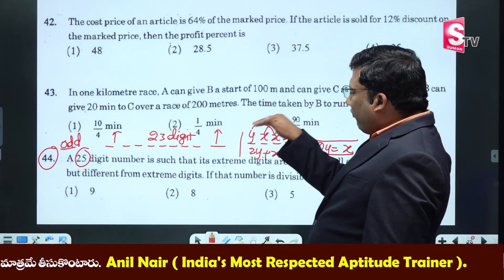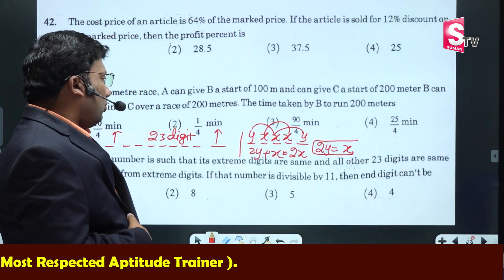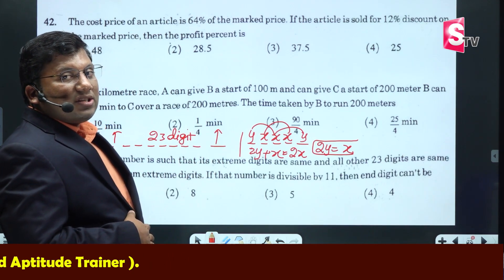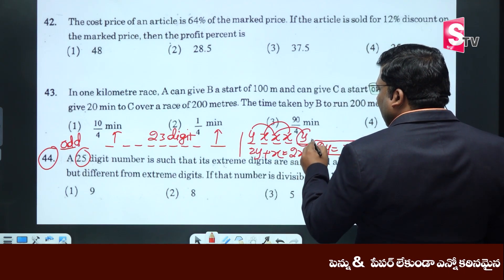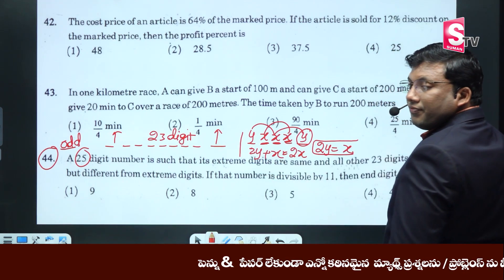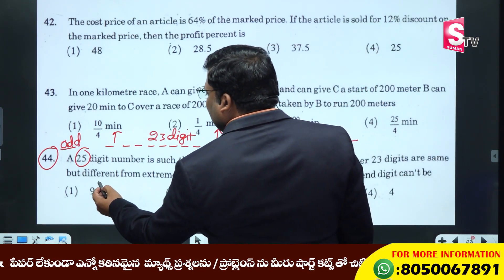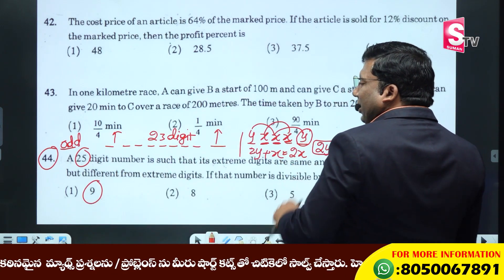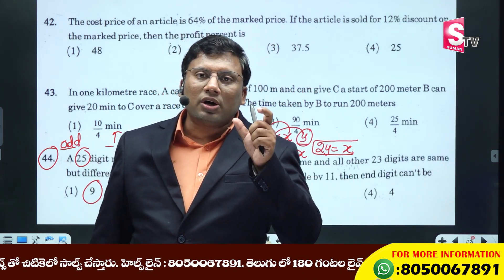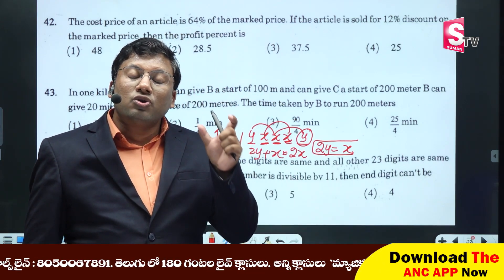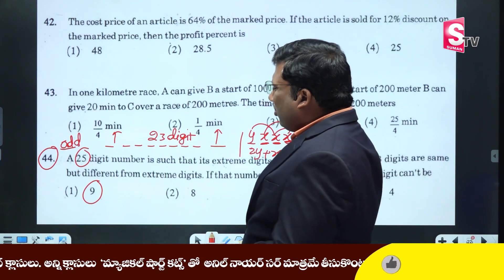Divisibility rule of 11: sum of odd places minus sum of even places. Basis: y plus x plus y minus of x plus x equals 2y, which equals 2y. This is one number — this number is double. 8 digits: y double, one digit double. x equals x.